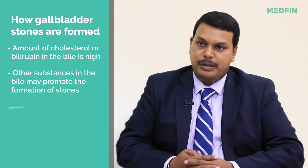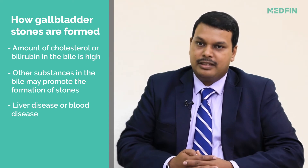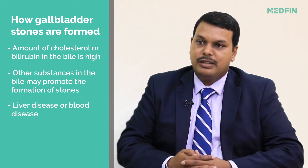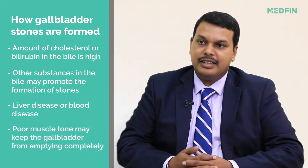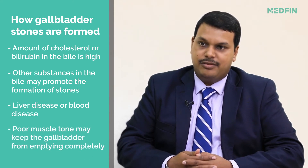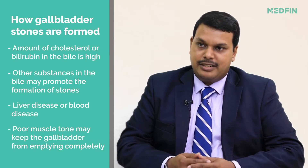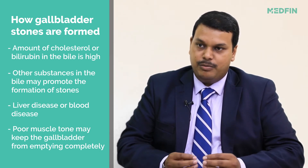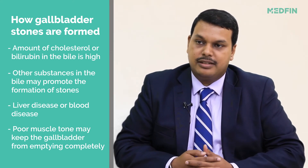There are also pigment stones, which come from the breakdown of blood pigments. These are commonly seen in conditions like hereditary spherocytosis and thalassemia, which are blood disorders where the blood breaks down and the breakdown products clump together, forming stones in the gallbladder.